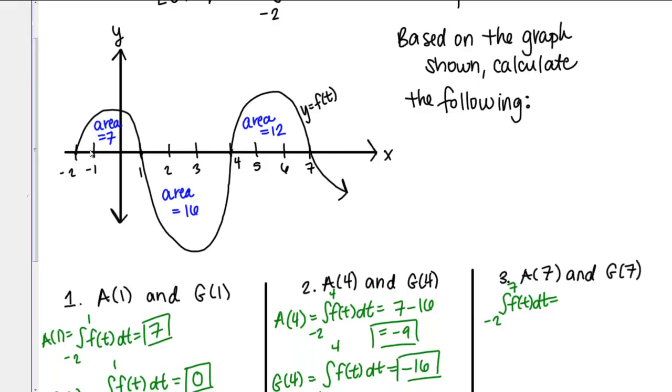Referencing my picture, I'm going all the way from negative 2 to 7. First, I've got this region that has a total area of 7, and it's positive. Then I have this area of 16, but it's below the axis, so minus 16. Then I have this area above the axis that has a total area of 12, so then that's going to be positive 12.